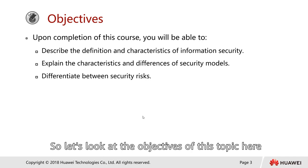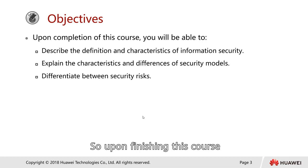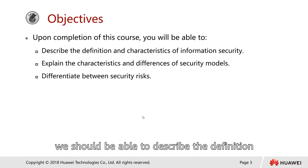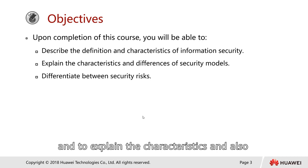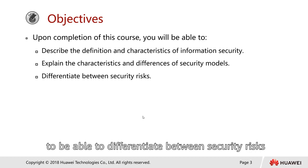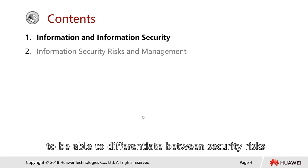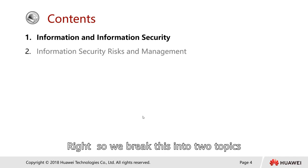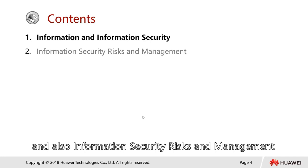Let's look at the objectives of this topic. Upon finishing this course, we should be able to describe the definition and characteristics of information security, explain the characteristics and differences of different security models, and differentiate between security risks. We'll break this into two topics: information security, and information security risk and management.